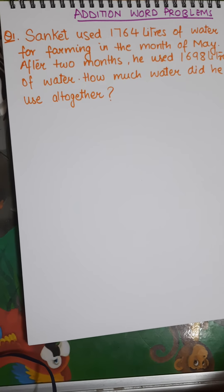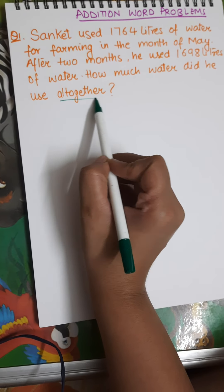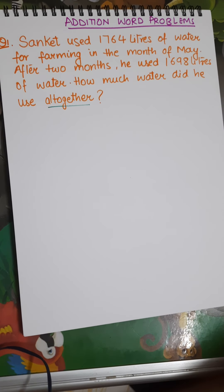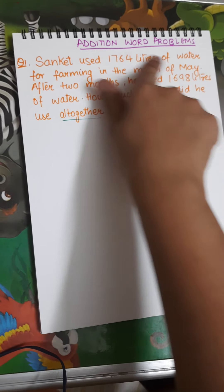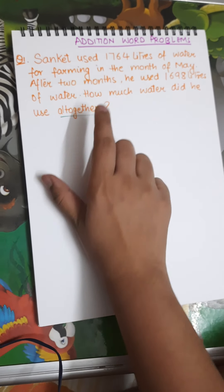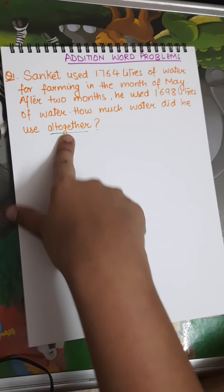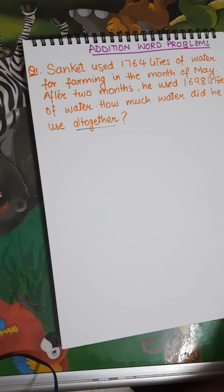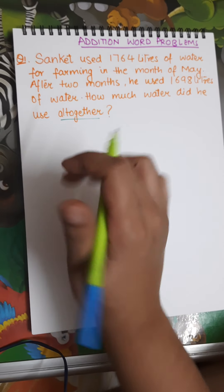So what's the catch over here? The keyword is 'all together.' Whenever you see 'all together,' it means that it is a word problem of addition. I have already told you the keywords — please keep those keywords in mind to identify which type of word problem it is.